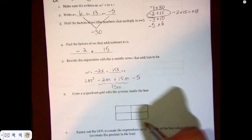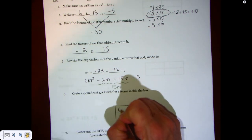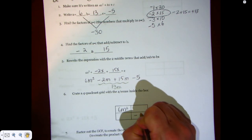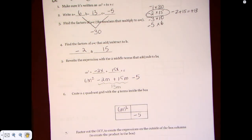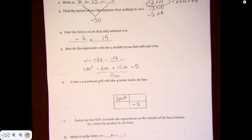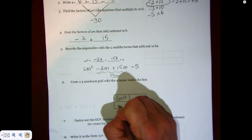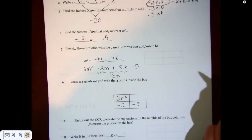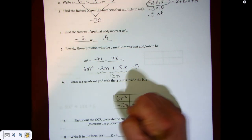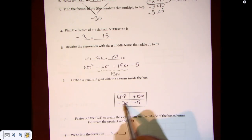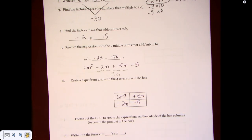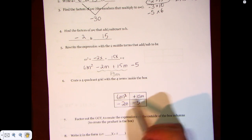We're now going to place in the boxes 6m squared and negative 5, and then I have negative 2m, positive 15m. Remember, it does not matter which of these two positions you take.